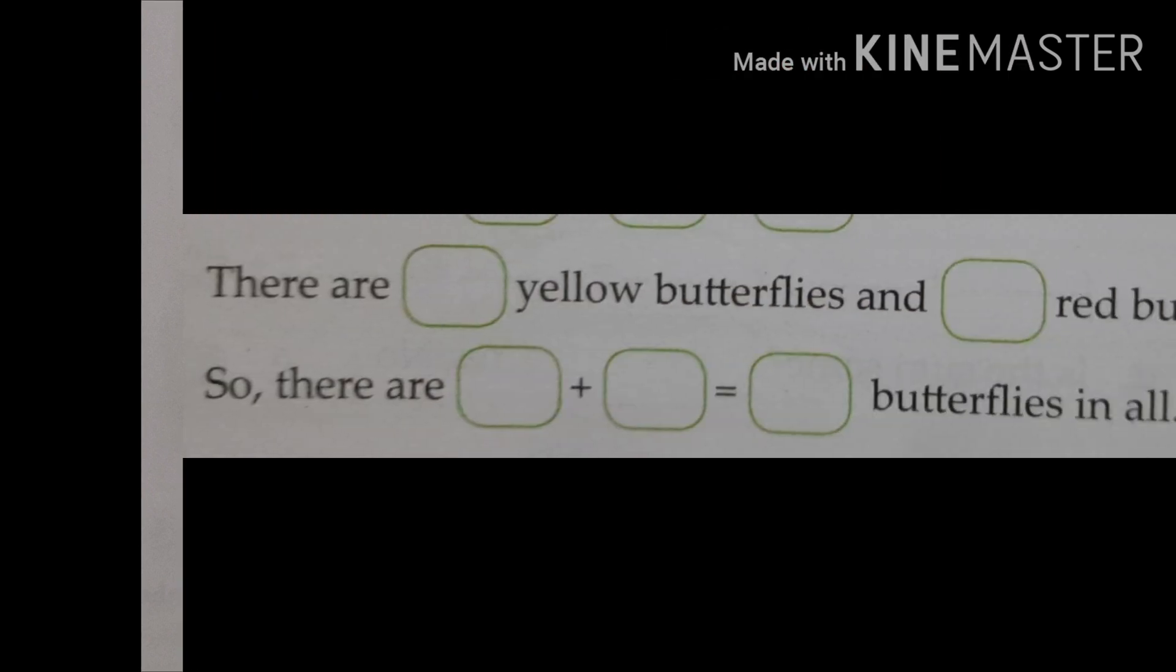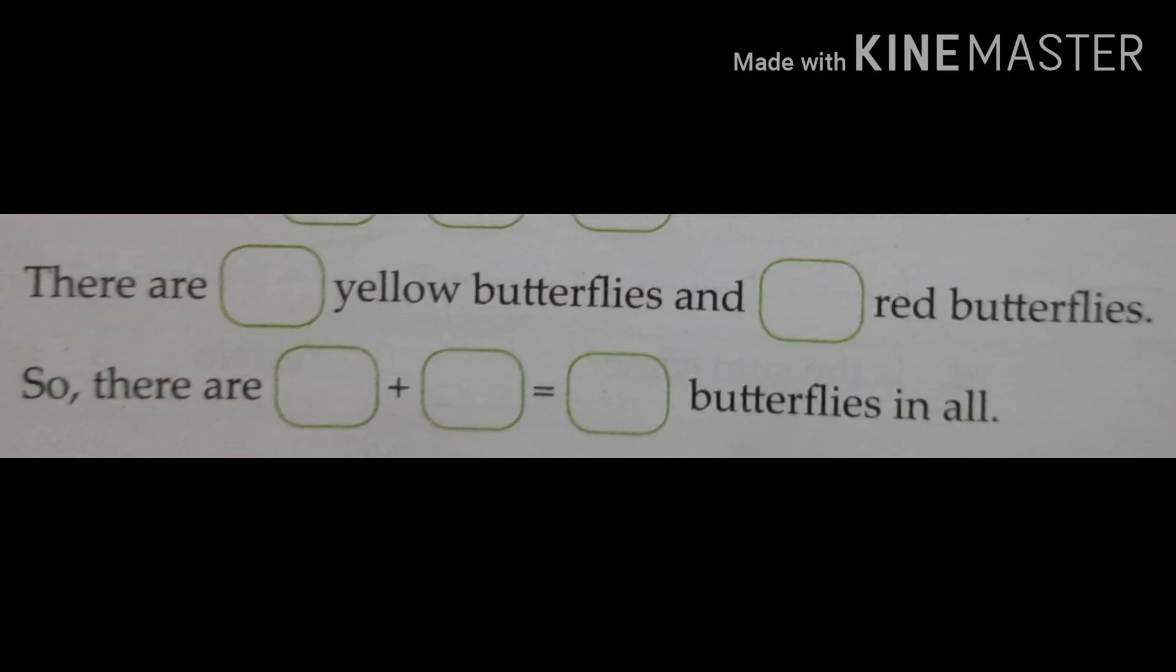Let us see the first one. There are yellow butterflies and red butterflies. So find out how many yellow butterflies and how many red butterflies. Then add it and find out the total number of butterflies.